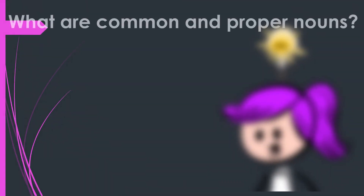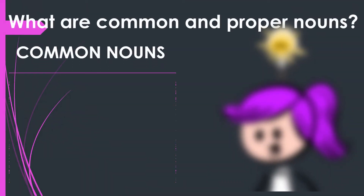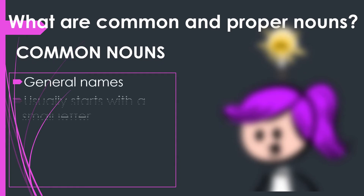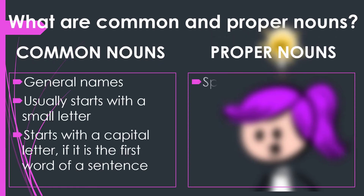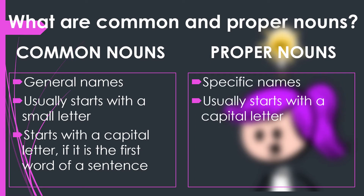Now let us learn about common and proper nouns. Common nouns are general names. They usually start with a small letter, unless they are the first word of a sentence. Proper nouns, on the other hand, are specific names. They usually start with a capital letter and are usually brand names or labels.